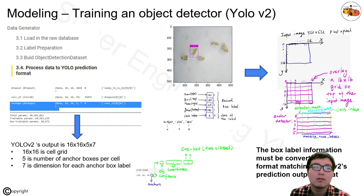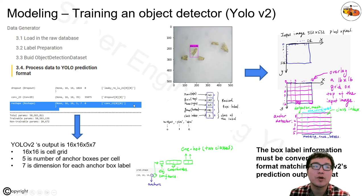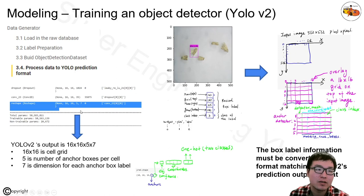We now have box information, but we cannot train the neural network yet because that information needs to be transferred into a format compatible with the output of YOLO v2. The output shape is 16 by 16 by 5 by 7: 16 by 16 is a cell grid, 5 is the number of anchor boxes per cell, and 7 is the dimension for each anchor box label.